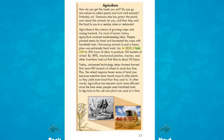In 1830, it took 250 to 300 hours of labor to produce 100 bushels of wheat. By 1890, mechanical planters, tractors, and other inventions had cut that time to about 50 hours. Today, advanced technology helps farmers harvest that same 100 bushels of wheat in much less time. Plus, the wheat requires fewer acres of land because scientists have found ways to alter plants so they yield more food. Agriculture has become much more efficient since the time when people used handheld tools to dig holes in the soil and plant one seed at a time.